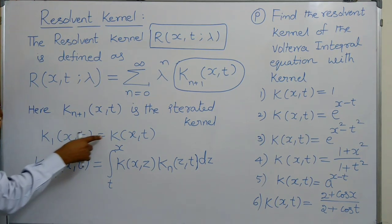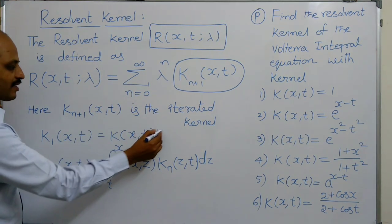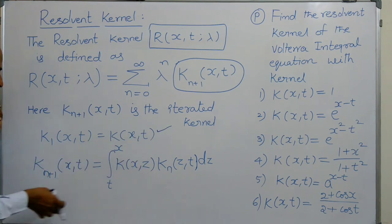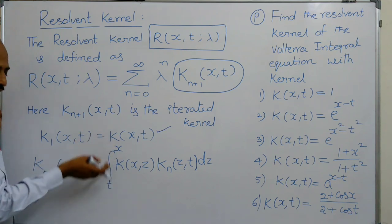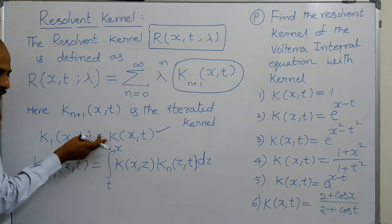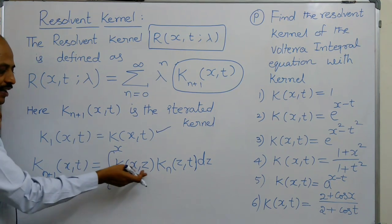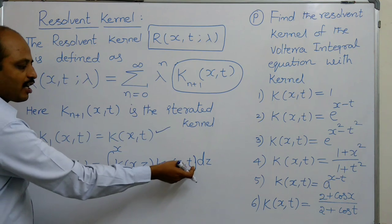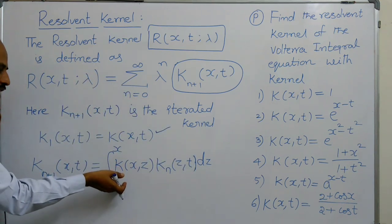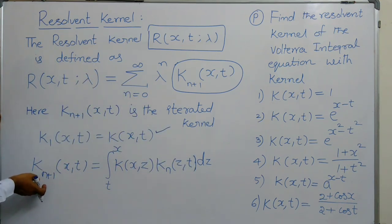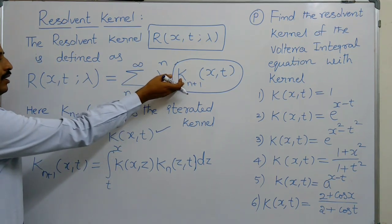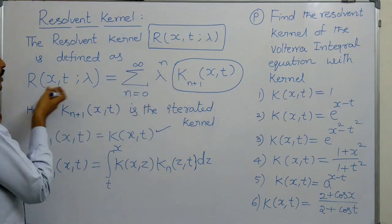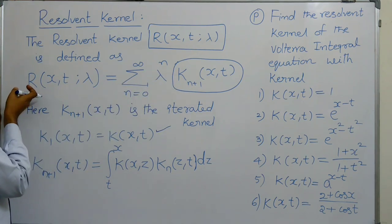K1 of X, T is equals to K of X, T — this is the given kernel. And K(n+1) of X, T is equals to integral from T to X of K(X, Z) times Kn(Z, T) dZ. By using this formula, we find the iterated kernels, and then substitute them to get the resolvent kernel.